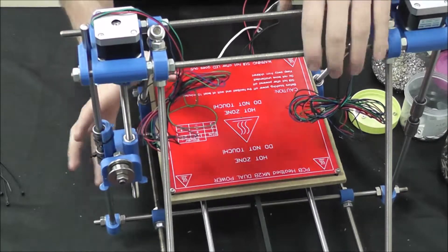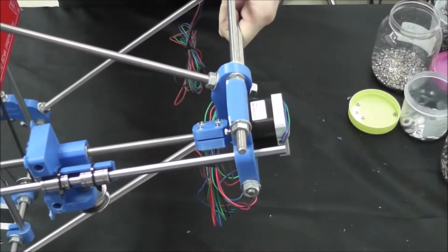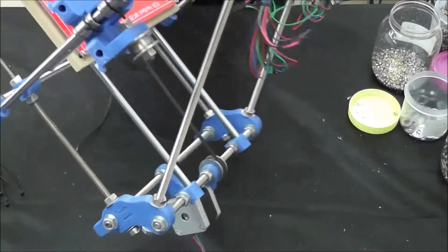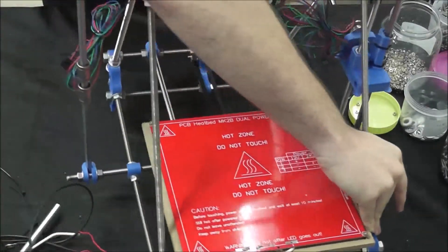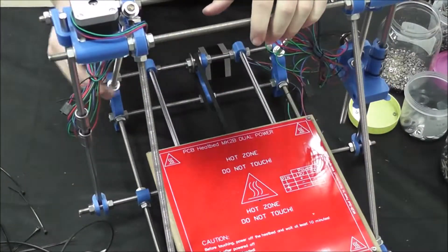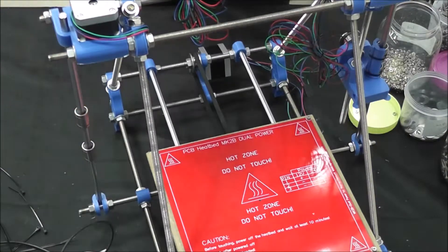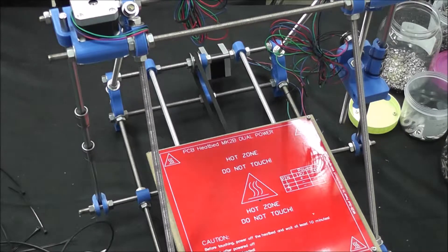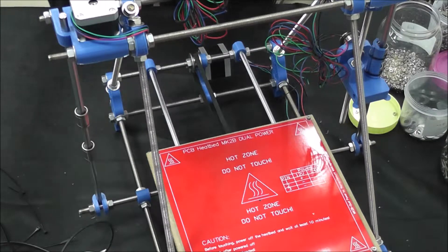Then we just tightened our coupler to basically pinch both the shaft and the threaded rod, so it's pretty simple. We're going to turn it around right now and do the same for the motor mount.